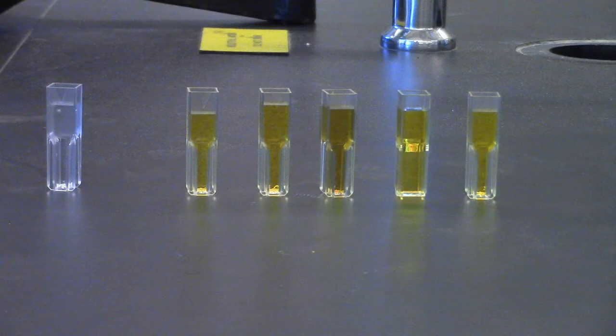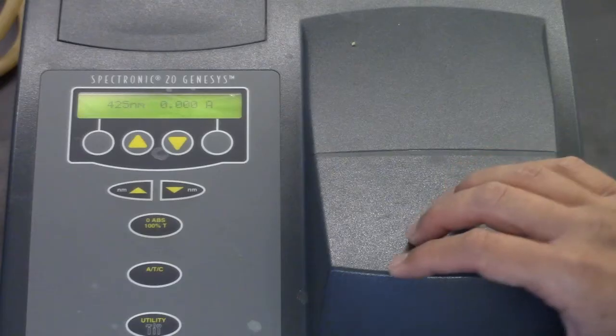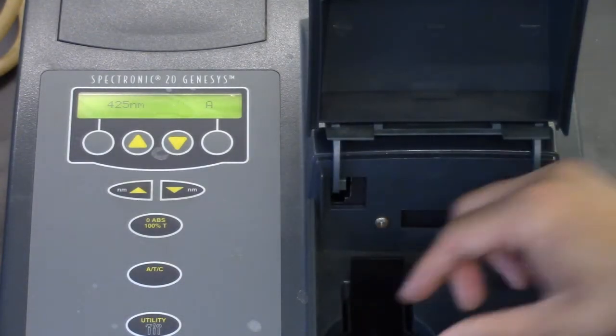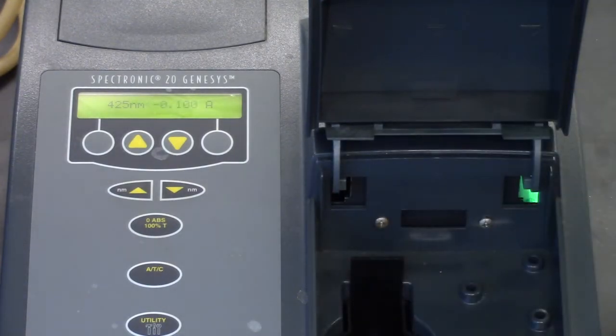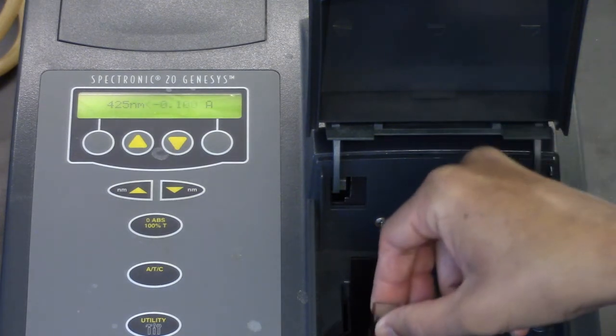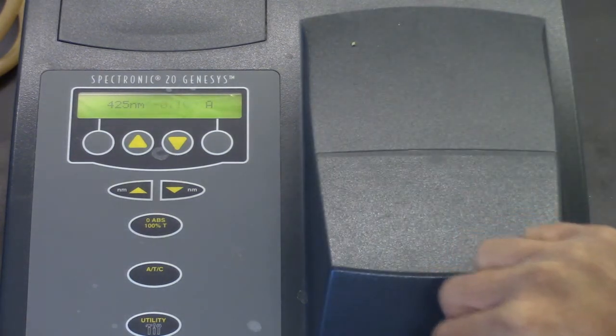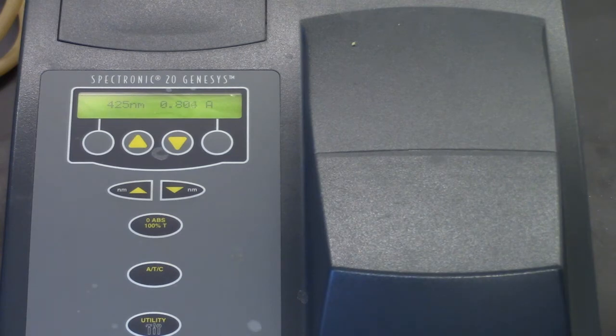You will need six cuvettes, one for each solution prepared for Part A, and one for distilled water, the blank that will be used to calibrate the spectrometer. For the best results, we need to use whichever wavelength has the maximum absorbance. The wavelength will then be used for measuring all the samples in Part A as well as those in Part B.